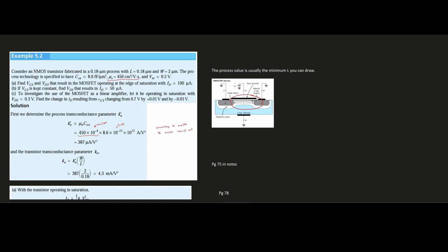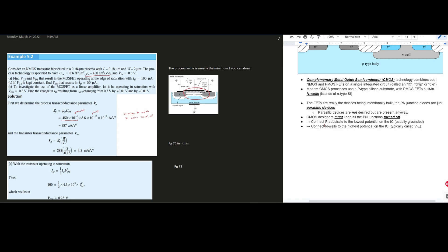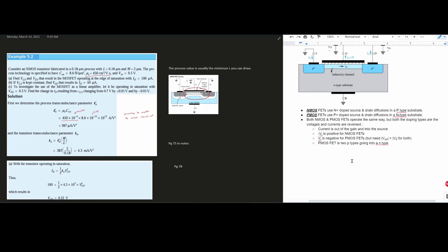Now we're going to do part A, B, and C, but we're going to start with part A first. So part A is to find VGS and VDS that result in the MOSFET operating at the edge of saturation with ID equal to 100 microamps. So to do this, we can determine the process transconductance parameter K' subscript N. Just a side note, the process value is usually the minimum L we can draw. So if we look at the notes linked below the like button, we have this NMOSFET device right here, and this is our L right in the middle, and it's the minimum L we can draw here.